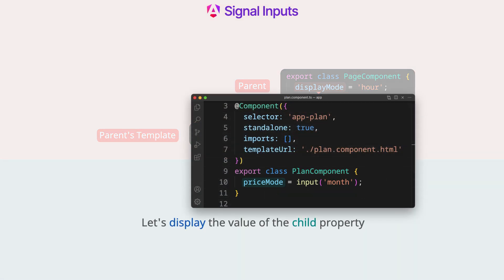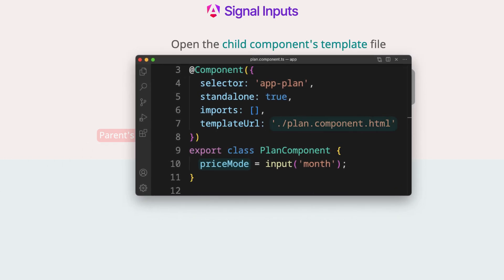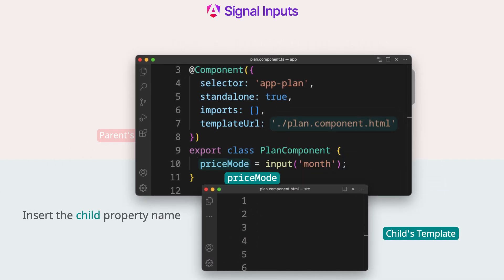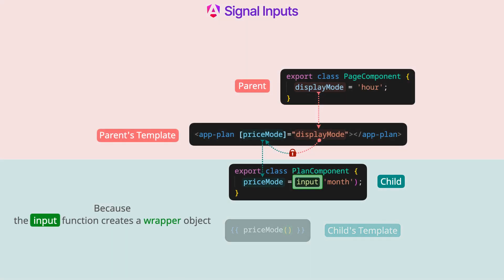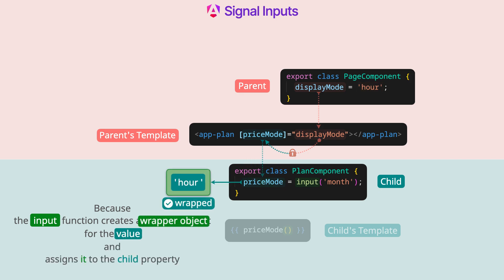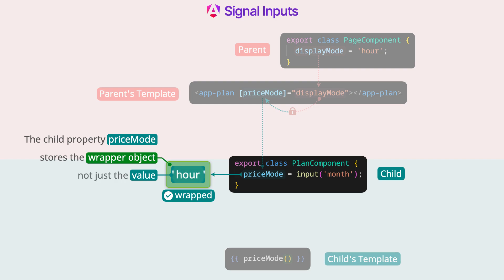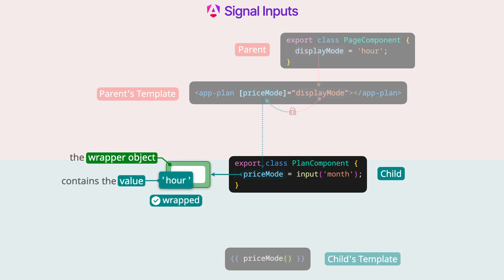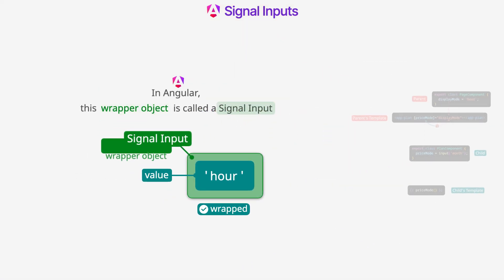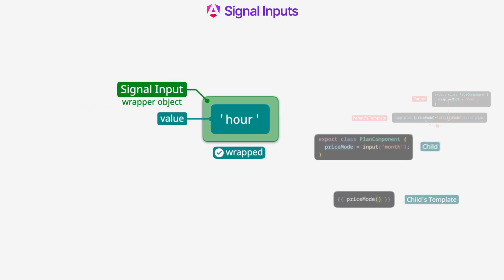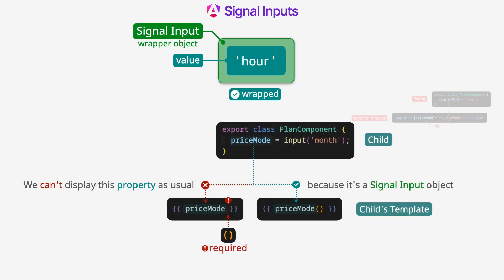To display the value of the child property in the browser, open the child component's template file. Insert the child property name with parentheses after it — we call this property as a function. This is because the input function creates a wrapper object for the value and assigns it to the child property. The child property stores the wrapper object, not just the value. The wrapper object contains the value. In Angular, this wrapper object is called a signal input. We cannot display this property as usual, because it's a signal input object.